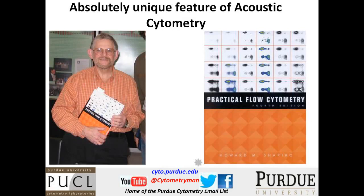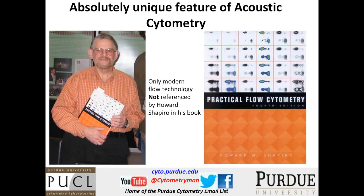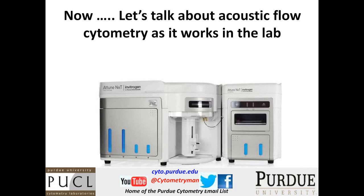I'd like to put up a picture of Howard Shapiro — I think you probably all know him — and his book, Practical Flow Cytometry, which I highly recommend. If you haven't got this book and you're interested in doing any type of flow cytometry, you really owe it to yourself and your lab to get a copy. I call it the Bible of flow cytometry. But there's one thing that's quite unique about acoustic flow cytometry: it's not mentioned in Howard Shapiro's book. And so that brings me to the interesting discussion about the Attune and its unique feature of having a different mechanism for aligning cells.